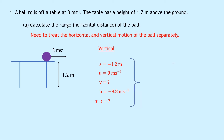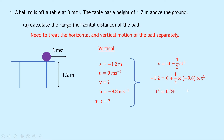Using the equation s equals ut plus a half at squared and substituting in the numbers: minus 1.2 equals 0 plus a half times minus 9.8 times t squared. Multiplying both sides by 2 to remove the fraction, then dividing both sides by 9.8 gives t squared equals 0.24, which gives a time value of 0.5 seconds.